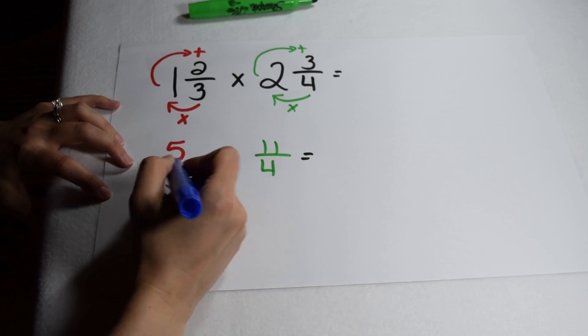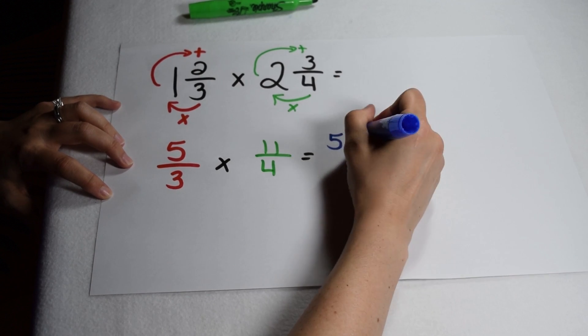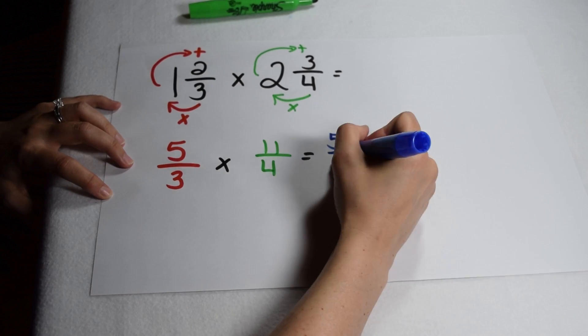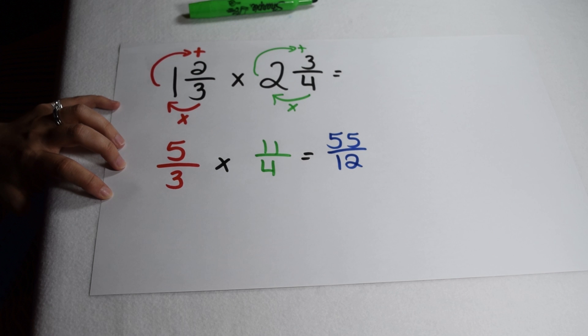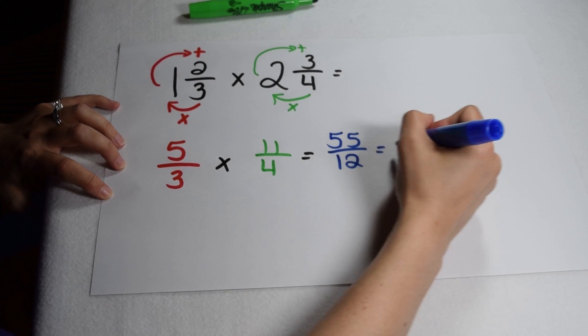Five-thirds times eleven-fourths. Multiplying my numerators together gives me 55. Multiplying my denominators together gives me 12. 55 over 12 is an improper fraction, so we have to change that to a mixed number.